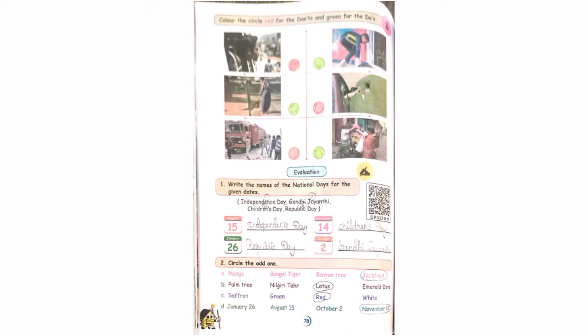Now look at the evaluation section. First one: write the names of the national days for the given dates. They have given options above. Now you have to select correctly and write it. November 14th is Children's Day. January 26th is Republic Day. October 2 is Gandhi Jayanti.